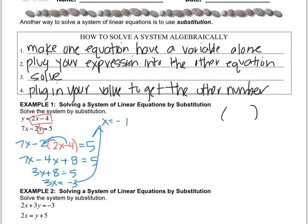We were trying to find the intersection point. So the intersection point has an x value of negative 1. Now I'm going to do step 4, which is plug my value to get the other number. I'm going to do y equals 2 times negative 1, because x is negative 1, minus 4. So I get y equals negative 2 minus 4. So that means that the y value is negative 6.